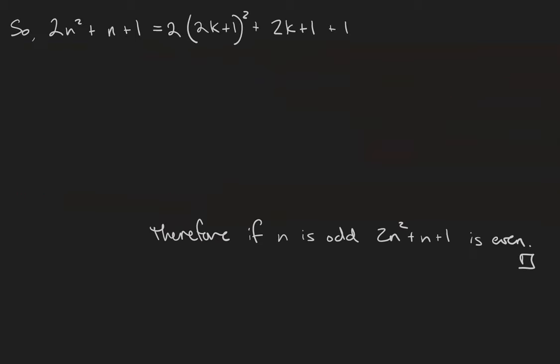Okay, now that I've assumed that n has the form 2k plus 1, I'm going to take that and do something with it. The goal of my theorem is to prove that this is even. So I'm going to take my n's and replace them all with 2k plus 1's. And now I'm just going to do some algebra and show that what I'm left with is an even integer.